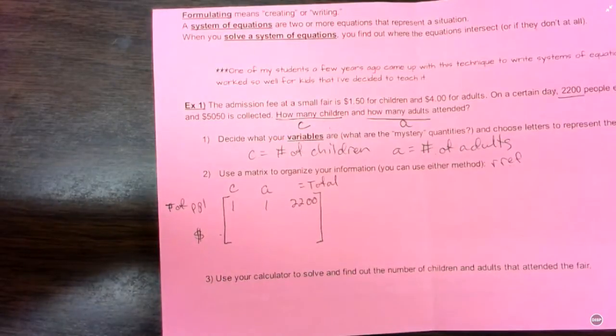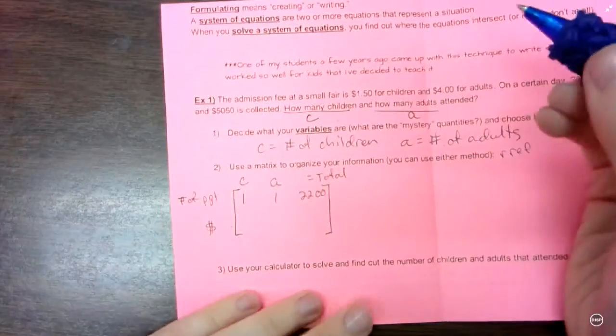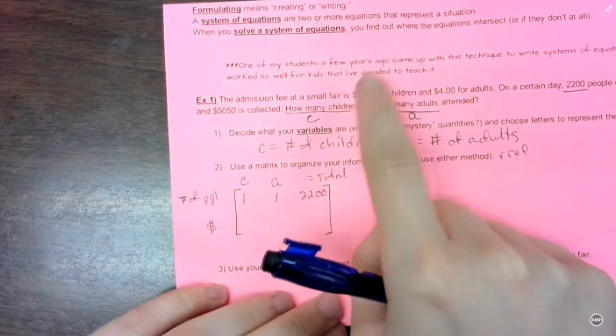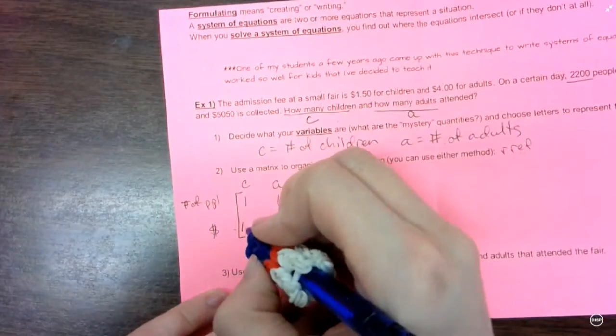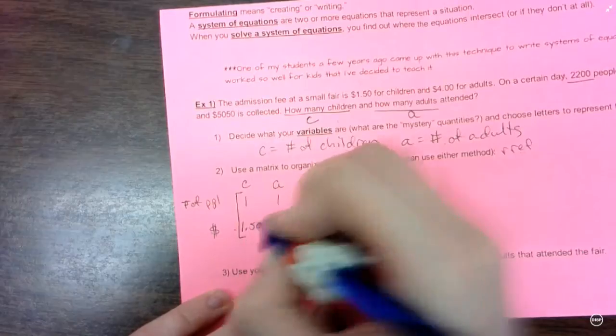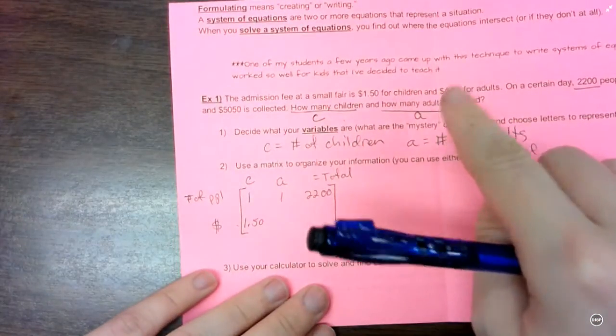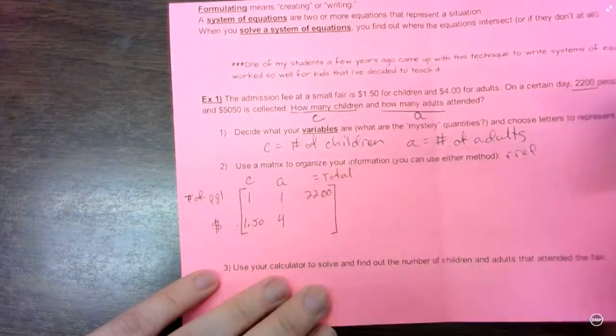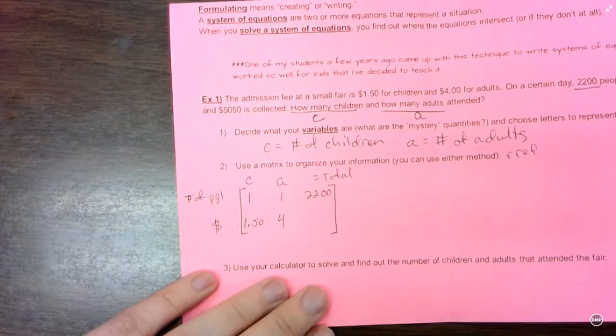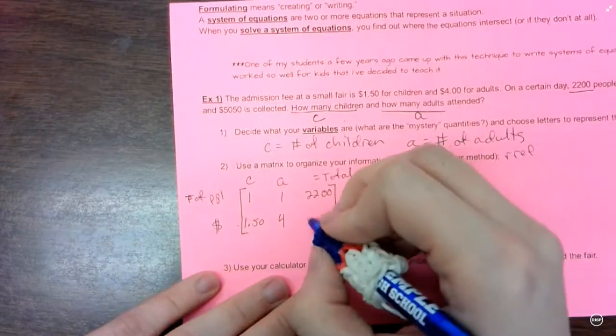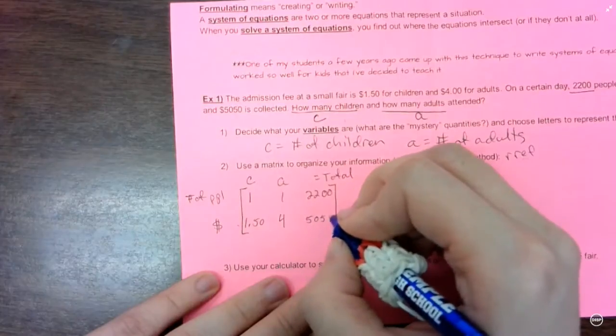Okay, so now let's do our cost. So each child paid $1.50. So I'm going to put $1.50. And each adult was $4. I'm going to put $4 for adults. And they collected a total of $5,050.